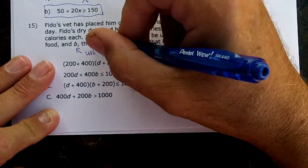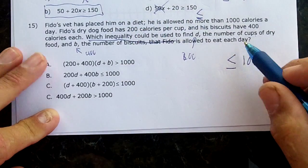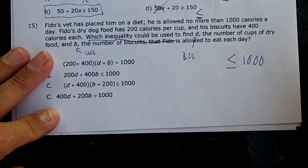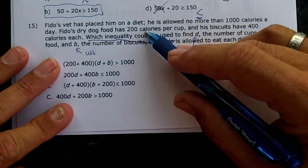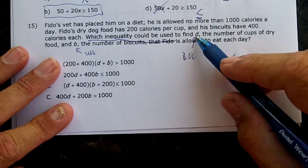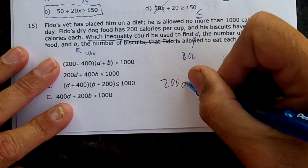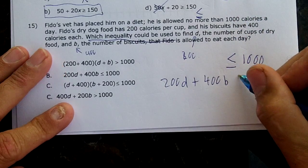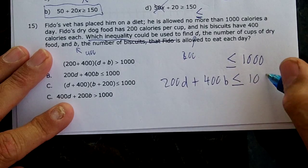Which inequality could be used to find the number of cups and the number of biscuits that Fido is allowed to eat each day? We're going to have 200 calories per cup, which is 200D, plus 400 per biscuit, which is 400B, and this has to be less than or equal to a thousand.